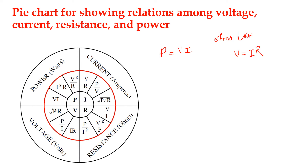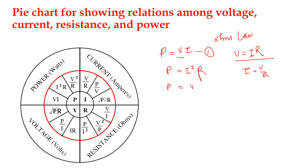From this, instead of V in the power equation, we substitute IR. So P is equal to I squared R. And since I is equal to V by R, substituting into the power equation gives us P is equal to V squared by R. So the three power expressions are: P = VI, P = I²R, and P = V²/R.